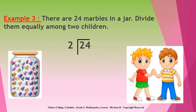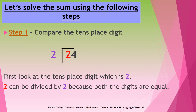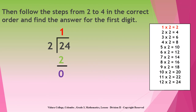Alright children, this is example number three. There are 24 marbles in a jar. Divide them equally among two children. To solve that sum, you should follow these steps. Step one is comparing the digits. Since we are dividing a two-digit number, first we should compare the tens place digit with two. The tens place digit here is two. We can divide two by two since both the digits are equal. Now children, you should follow steps two to four in the correct order to find the answer for the first digit. We followed those steps in the previous examples, please refer to them.